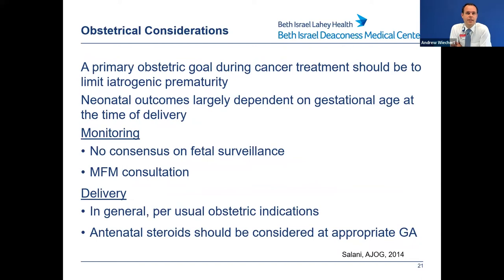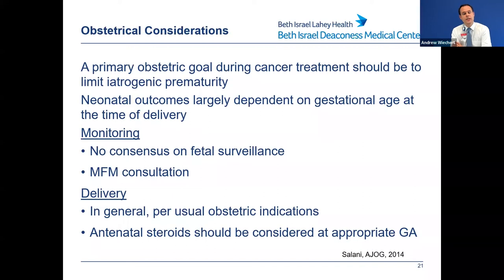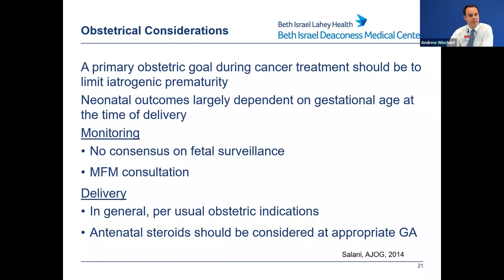The primary obstetrical goal during cancer treatment is to limit iatrogenic prematurity. We want to work together with cancer and pregnancy specialists to provide appropriate cancer treatment without unduly ending the pregnancy early. Neonatal outcomes are heavily dependent on gestational age at delivery, so delaying delivery as long as safely feasible, in close consultation with MFM and potentially pediatrics, is the best option. Delivery should be per the usual obstetric indications, with antenatal steroids considered at the appropriate gestational age — with one important caveat related to cervical cancer. In general, delivery is vaginal or cesarean per standard obstetric indications.